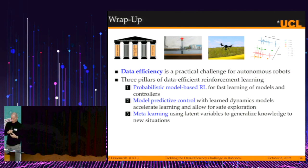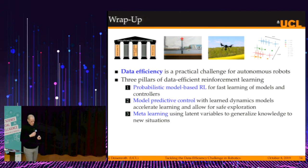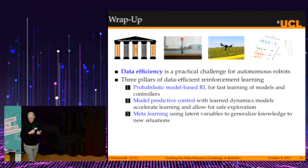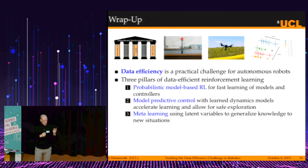To summarize the meta-learning part: we want to generalize knowledge from known situations to unseen ones to facilitate few-shot learning. We propose using a latent variable model to describe how related the tasks are. We achieve a significant speed-up in model learning and model-based reinforcement learning compared to various baselines.